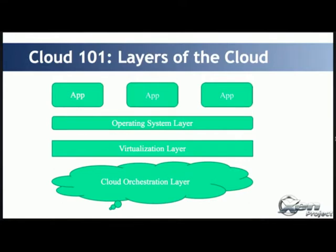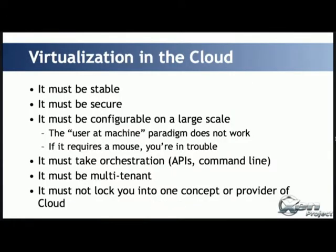The first layer of the cloud is your application, running on top of an operating system. After that we have the virtualization layer. My talk will be mainly on the virtualization layer. What we need for the virtualization layer: first, it must be stable and secure. You need to configure on a large scale where you have thousands of servers and you need something to manage them automatically. It must support an API and command line tools to manage multiple servers.